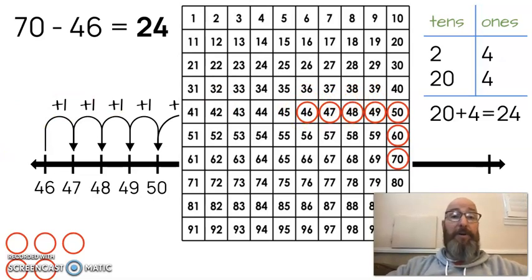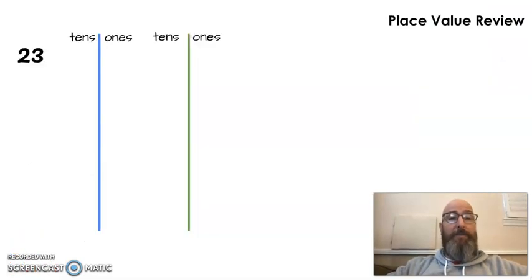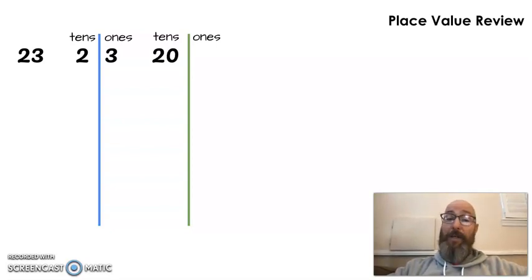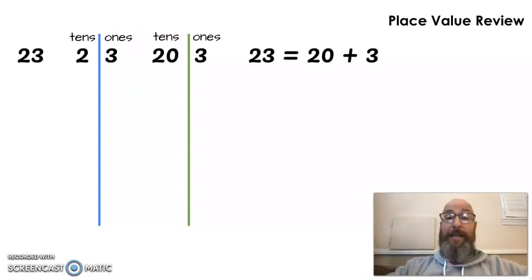Now let's practice putting some numbers together with our place value. Because I think we need to understand how to do this to be able to solve these. Let's take the number 23. If I put a line in between those two numbers, I have two tens and three ones. Two tens, of course, is worth 20. And three ones, of course, is worth 3. So 23 would equal 20 plus 3.